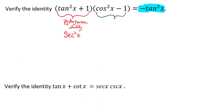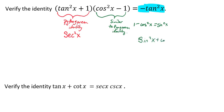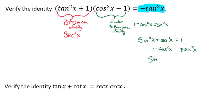Over here, this is similar to one of our Pythagorean identities. We have that 1 minus the cosine squared of x equals the sine squared of x, and we get that because the sine squared of x plus the cosine squared of x equals 1. If we subtract our cosine squared of x from both sides, we get that the sine squared of x equals 1 minus our cosine squared of x.